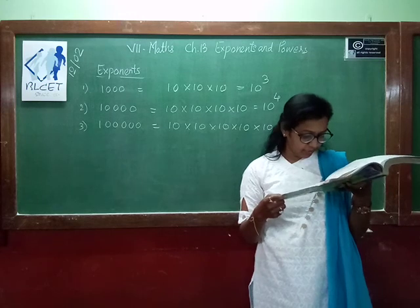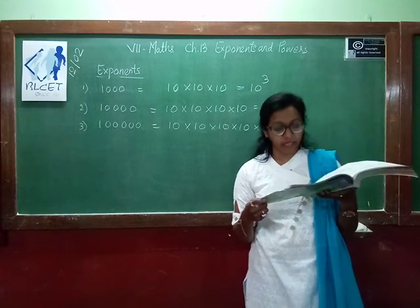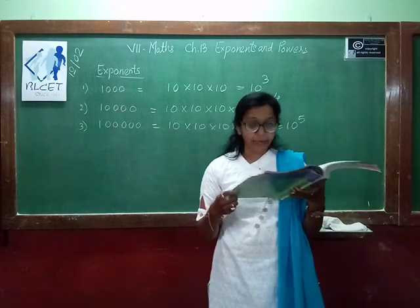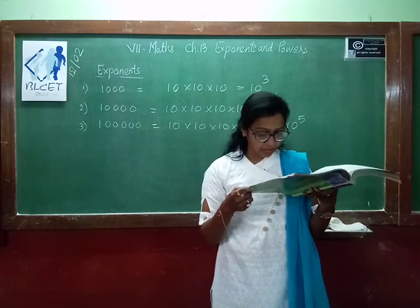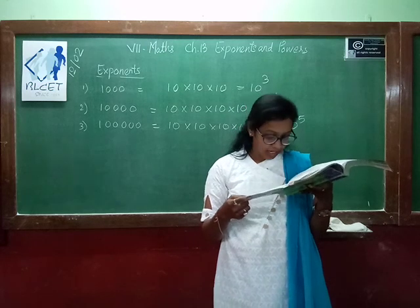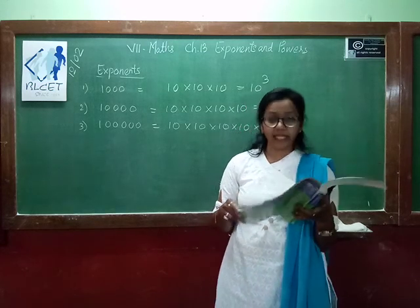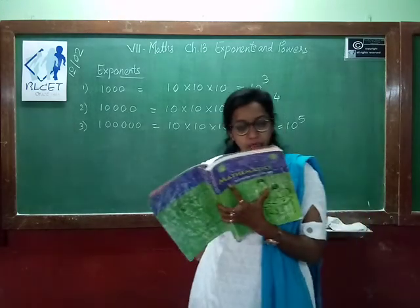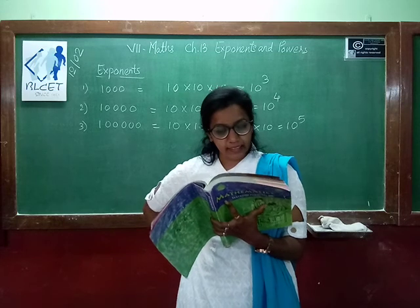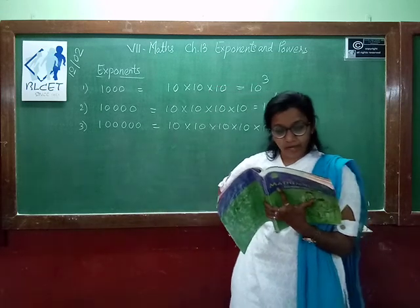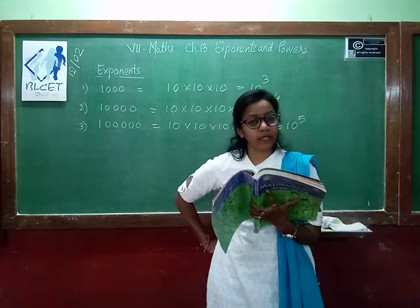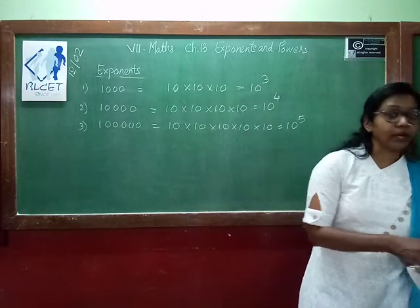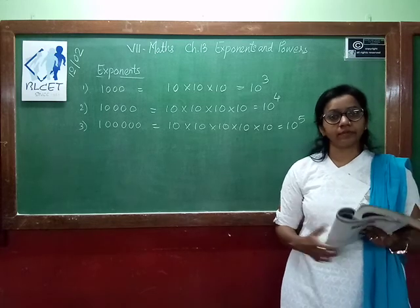In your textbook, 10 power 4 is the exponential form of 10,000. In both these examples the base is 10. In case of 10 power 3 the exponent is 3, and in case of 10 power 5 the exponent is 5. Now we have used numbers like 10, 100, 1000, etc., while writing numbers in expanded form. Let's see how you can represent those numbers in terms of exponents.